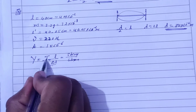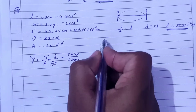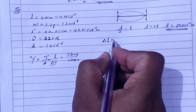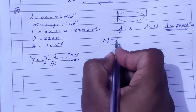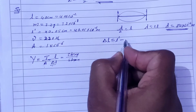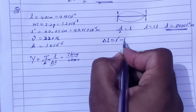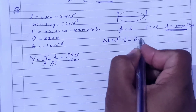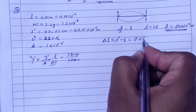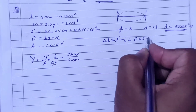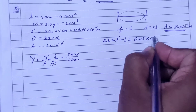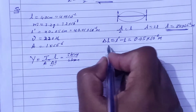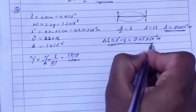We need delta L and tension T. First, let's find delta L. Delta L is the final length minus the original length — the stretch is 0.05 cm, which in meters is 0.05 × 10⁻² meters. So this is our delta L.